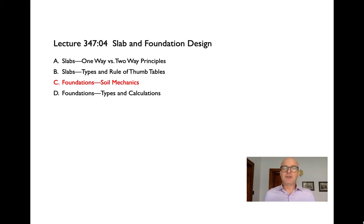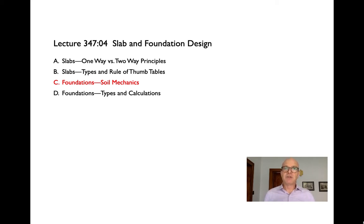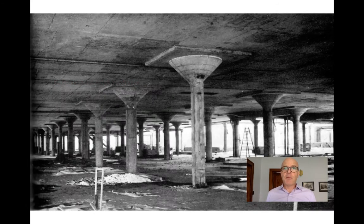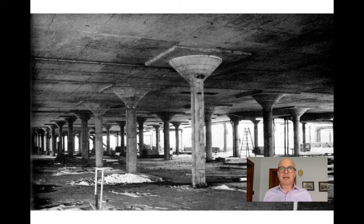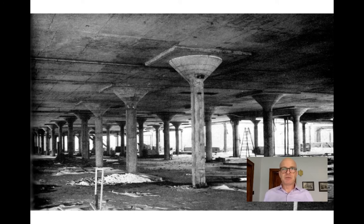We've calculated how loads flow through a fairly simple building frame, through slabs, beams and girders, columns, and now we have to figure out how to take those very big loads — the whole weight of the building — and distribute them over the ground. We talked before about collecting loads from slabs and bringing them into columns, and how we can design two-way slabs so that loads are traveling in as many different directions as possible.